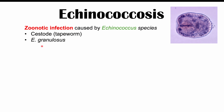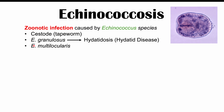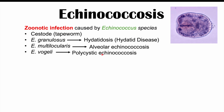The different species include echinococcus granulosus, which causes what we call hydatidosis or hydatid disease. We also have echinococcus multilocularis, which causes alveolar echinococcosis. There's also echinococcus vogeli, which causes polycystic echinococcosis. The one we're going to focus on mostly in this lesson is echinococcus granulosus, which causes hydatid disease.